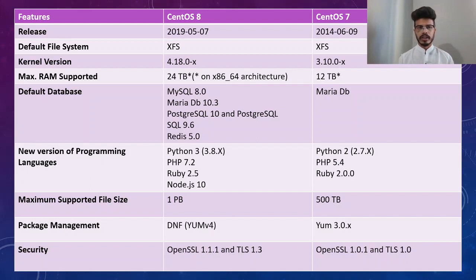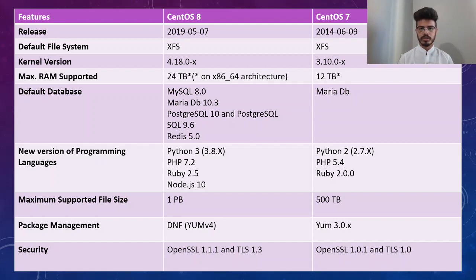The maximum supported file size is 1 petabyte, which is equivalent to 1024 terabytes. Currently the highest storage hard drive on the market is only 20 TB, so you would need at least 50 hard drives to fill one petabyte. The main difference in package management is DNF, which has replaced yum — it is the upgraded next version of yum. In CentOS 7, yum 3.0 was used; yum stands for Yellow Dog Updater Modified.